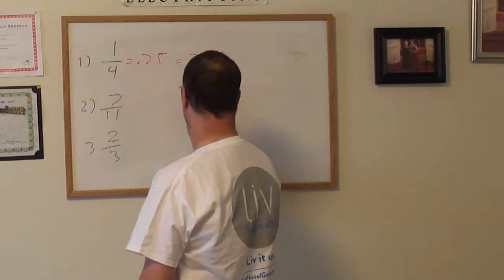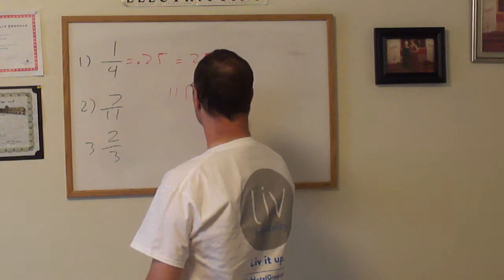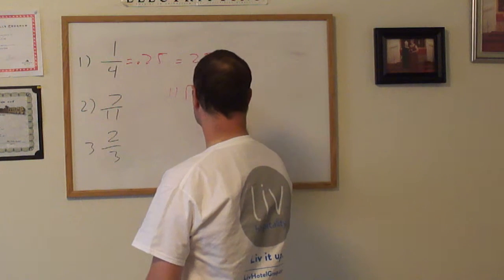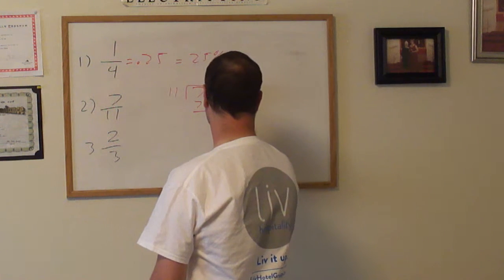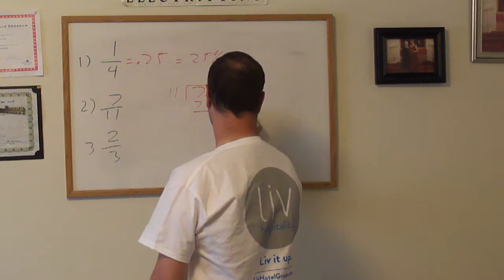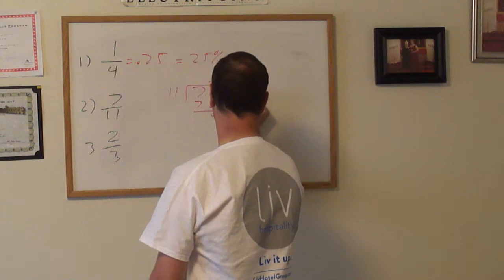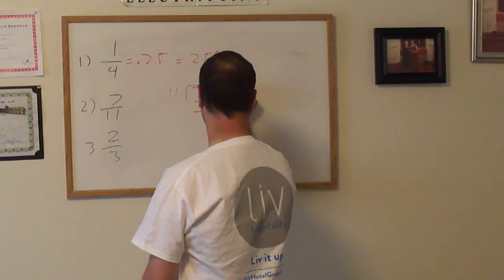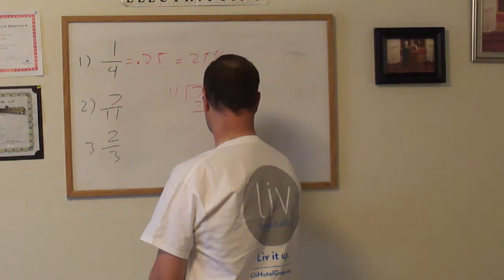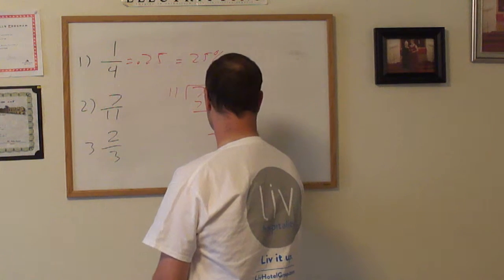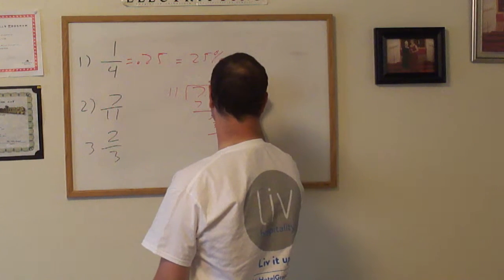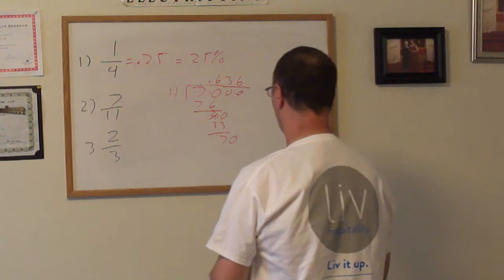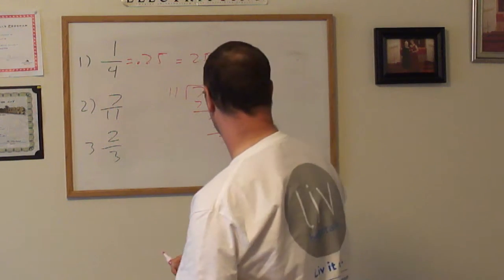This'll go in 3 times, 33, 33, 33... I see where this is going. I see where this is going - 0.6363.